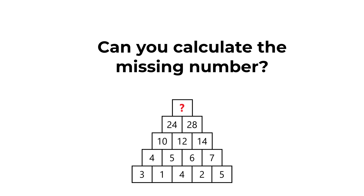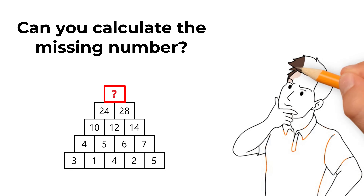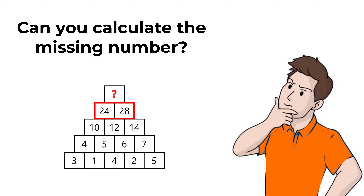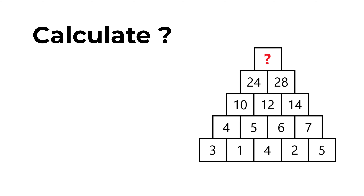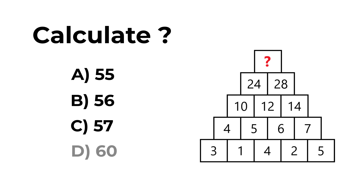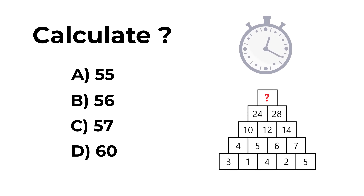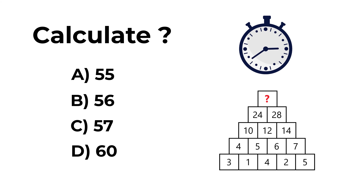Here's one of my favorite questions because it's so unusual. You're presented with a pyramid containing 5 different layers. From top to bottom: a question mark at the top, then 24 and 28, then 10, 12, and 14, then 4, 5, 6, and 7, and the bottom layer has 3, 1, 4, 2, and 5. You're presented with 4 choices for the missing number: A — 55, B — 56, C — 57, and D — 16. Give yourself 5 to 15 seconds to calculate the answer.